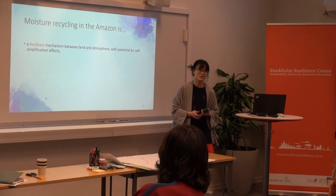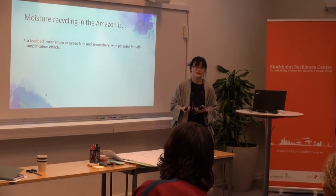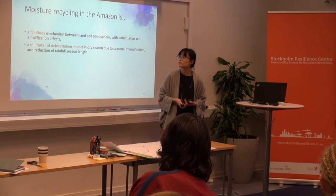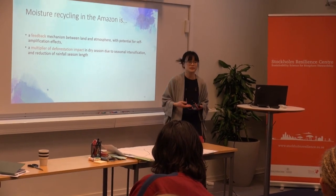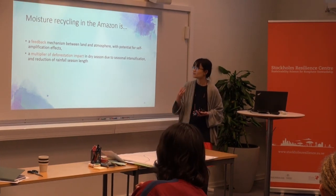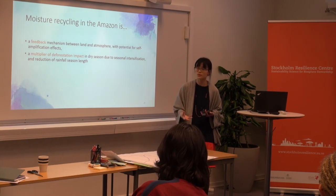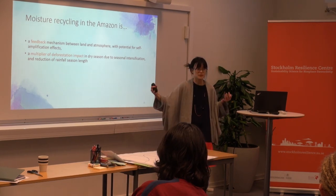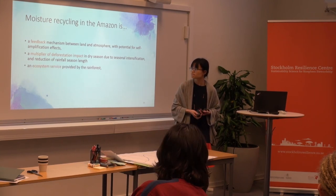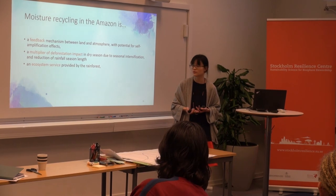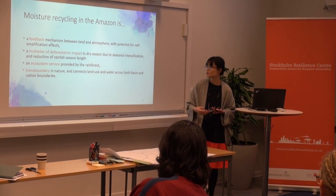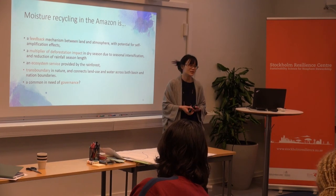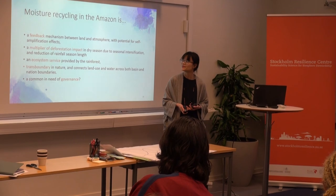To summarise: moisture recycling in the Amazon is a feedback mechanism with potential for self-amplification effects, and it has implications for forest resilience. It's also a multiplier of deforestation impact, particularly in the dry season, when there is seasonal intensification of moisture recycling. The land's role becomes more important when rainfall is most scarce, and also in terms of reduction of the rainfall season length. It's an ecosystem service provided by the rainforest, and it's inherently transboundary — crossing basin and national boundaries. This is a commons that is currently not governed. Do we need to govern it? How? I leave that as the question.